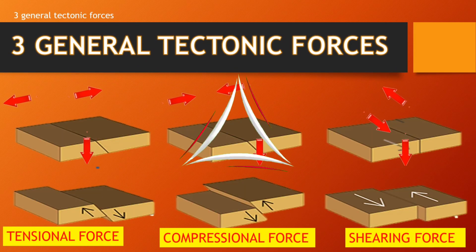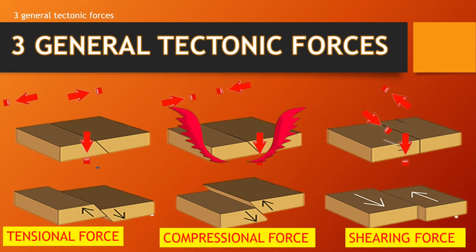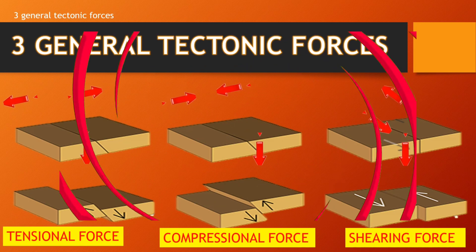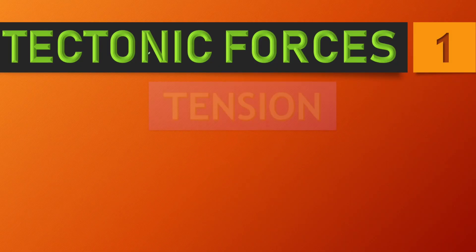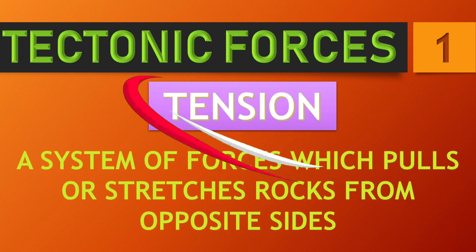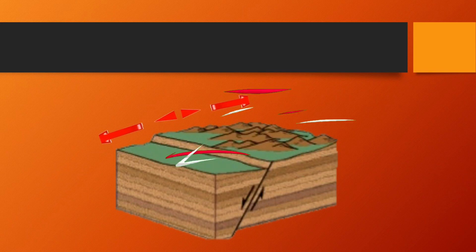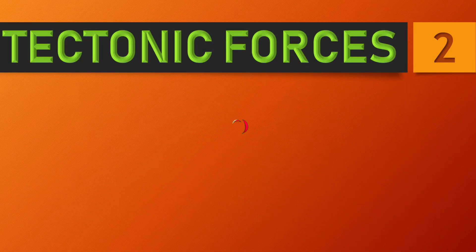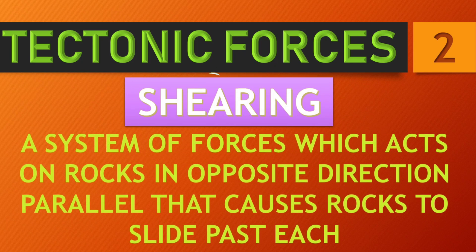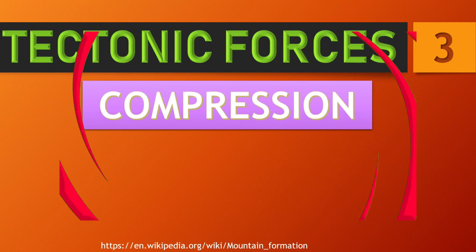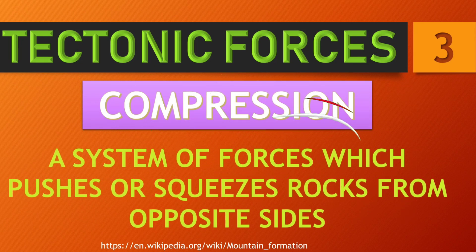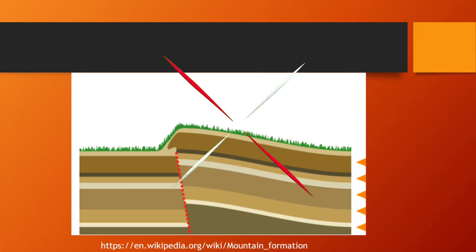There are three general tectonic forces. Number one, tensional force. Two, compressional force. Three, shearing force. Number one is tension force: a system of forces which pulls or stretches rock from opposite sides, as shown by the direction of the arrows. Pangalawa sa tectonic forces ay ang shearing: a system of forces which acts on rocks in opposite directions parallel, causing rocks to slide past each other. The last tectonic force is compression: a system of forces which pushes and squeezes rock from opposite sides. This is one evidence of compression.